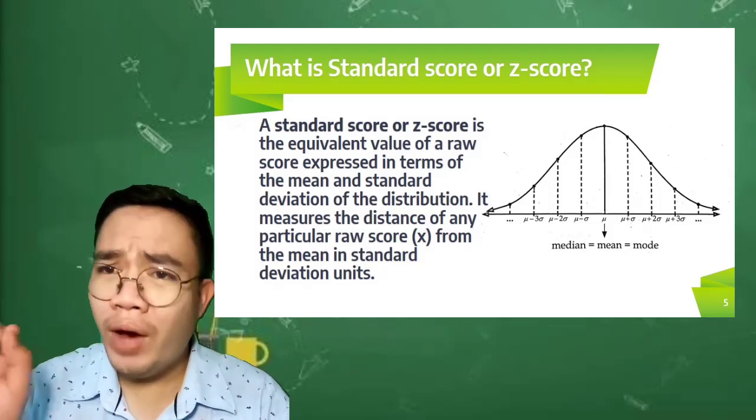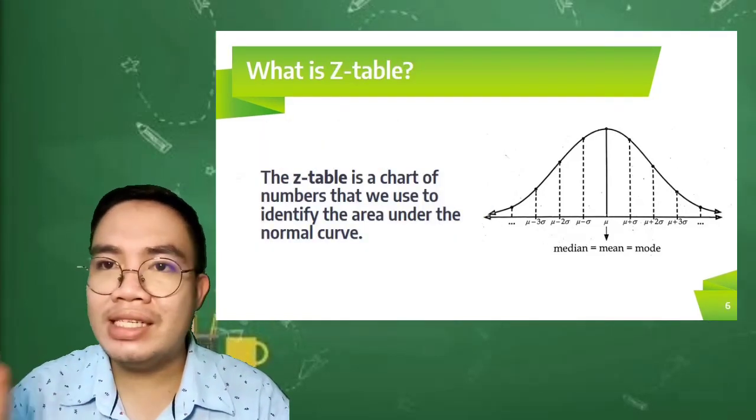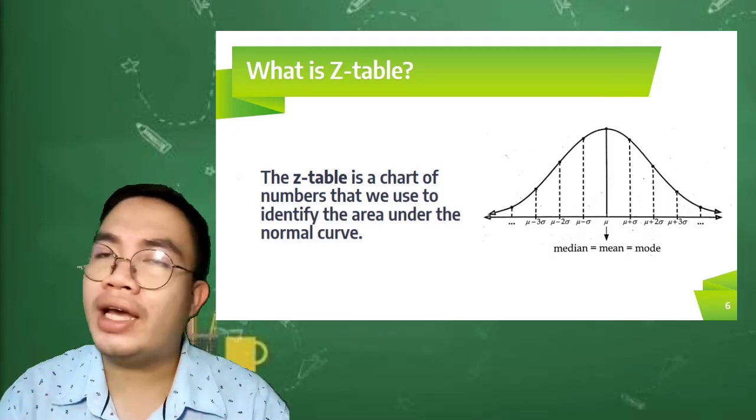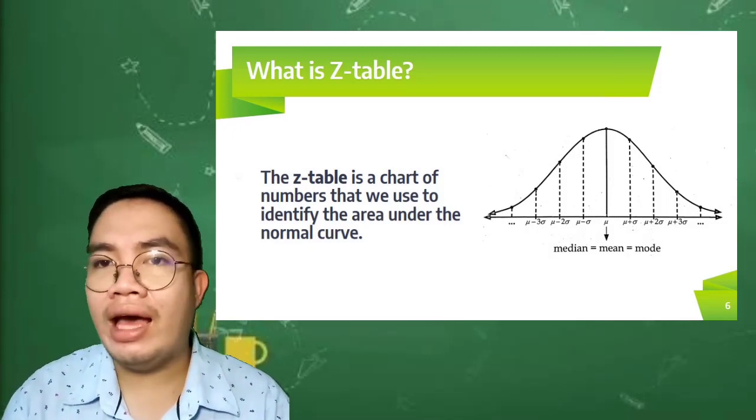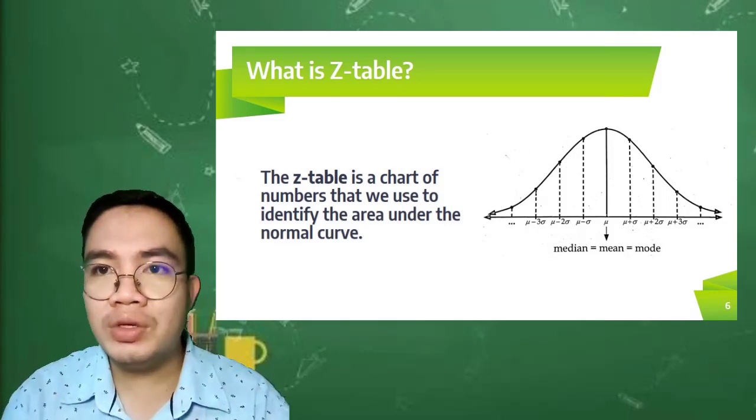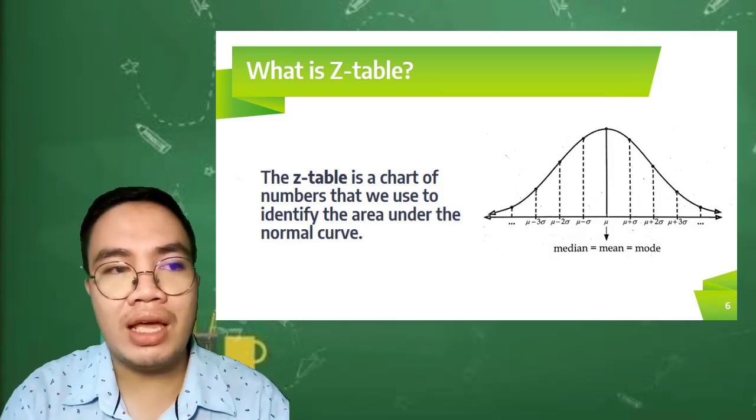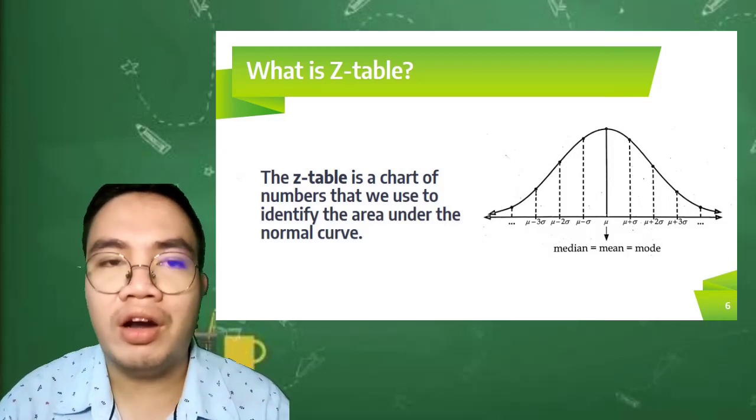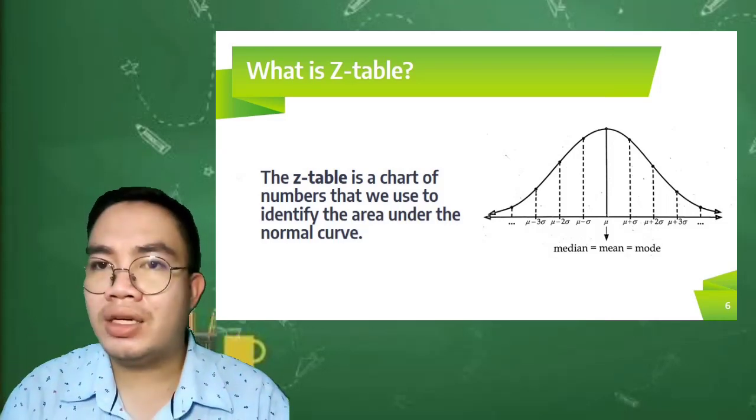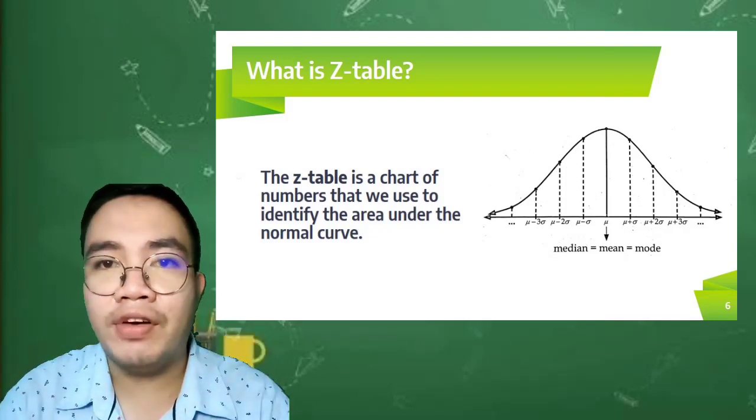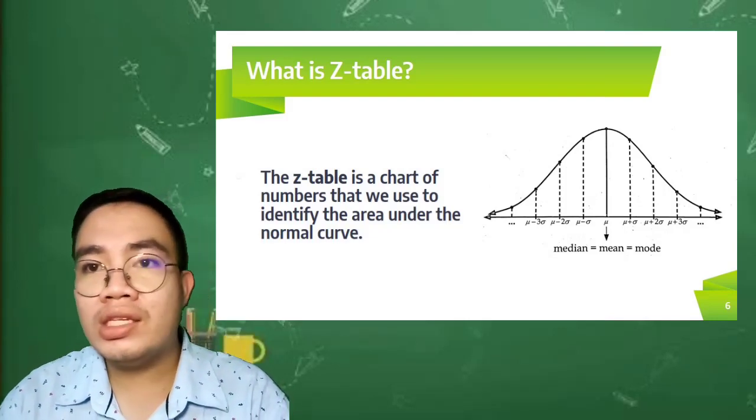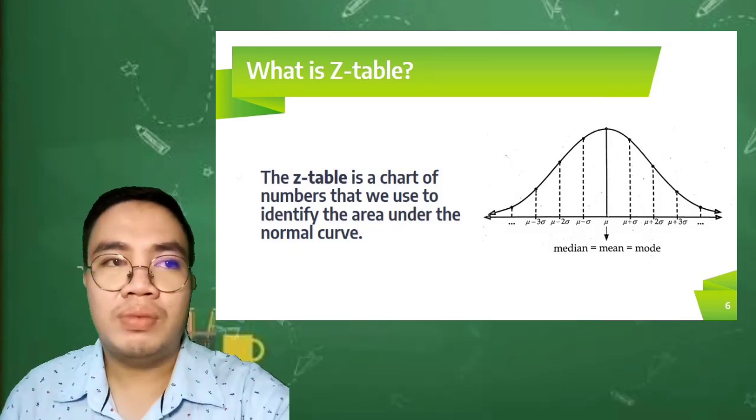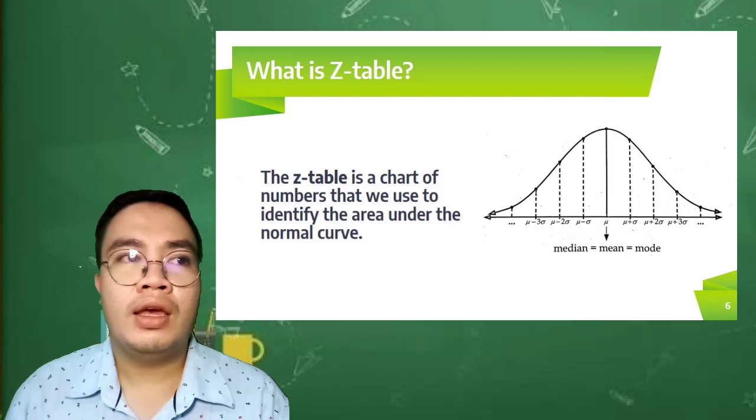What is our Z-table? Our Z-table is a chart of numbers that we use to identify the area under our normal curve. We use the Z-table to find the area of the Z-score covering our normal distribution, whether the area covered is from the mean going to the Z-score or from 0 to Z-score covering the entire distribution that we have.